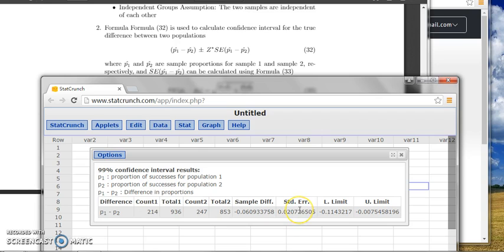And the lower limit means the lower bound of the confidence interval, upper limit is the upper bound of the confidence interval. So you will say that the 99% confidence interval for the difference of the population proportion is from negative 0.1143217 to negative 0.0075458196.